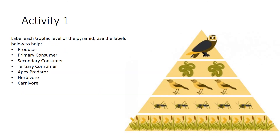I'd like you to have a go at this activity. You can jot it down on paper or print it off if possible. Label each of the levels using the labels provided — I've given you a little bit of help. You did something similar in the previous session; this is just a slightly different shape. If you need to go back and look at the previous video, do so, then pause the video and attempt this activity.